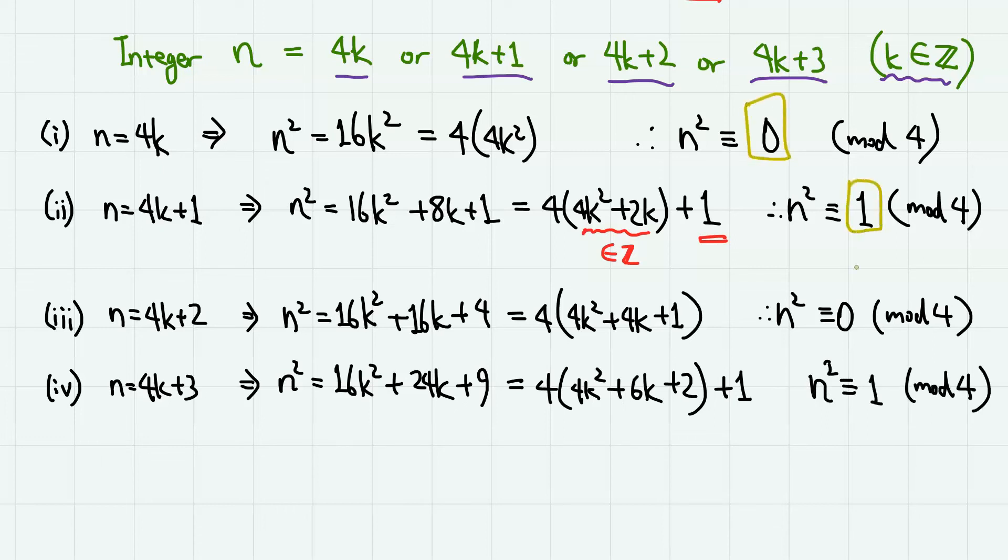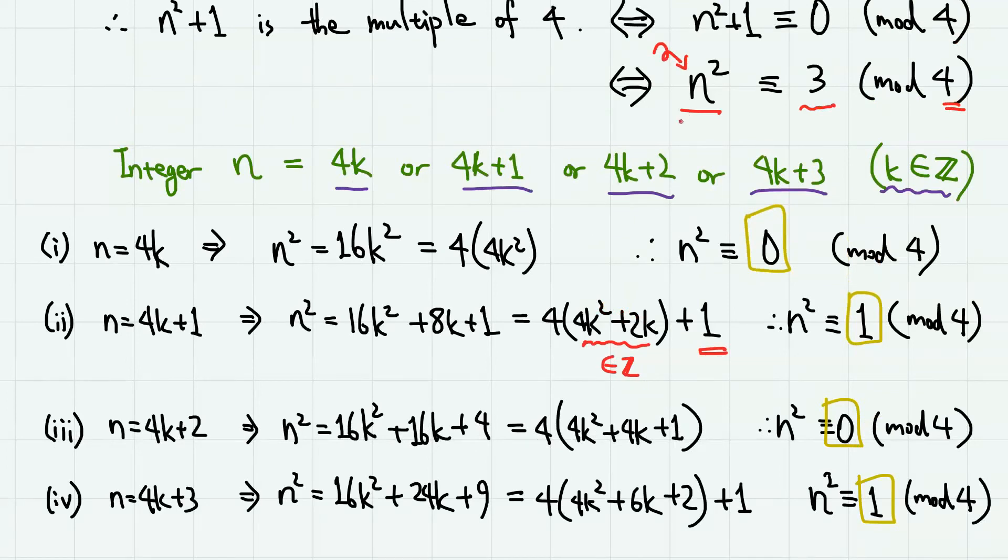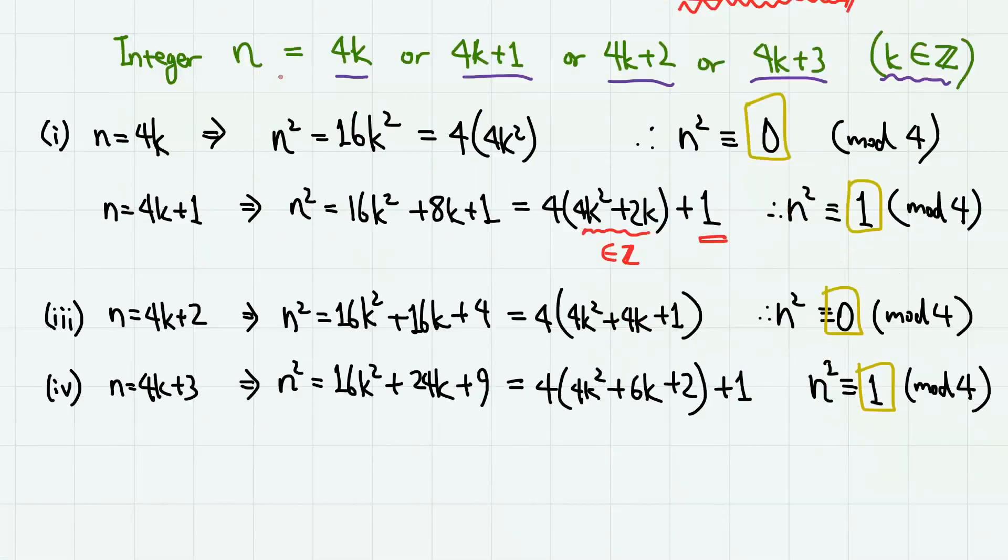Now notice that n² only gives remainder 0 or 1 when divided by 4. And this contradicts the fact that n² must have remainder 3 when divided by 4, because n² + 1 is a multiple of 4. So we have a contradiction.